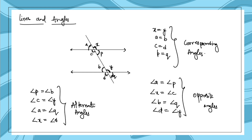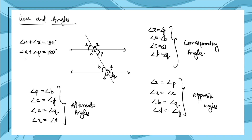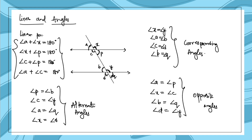Here, p and b, and c and y are called alternate interior angles because they are on the inner side. These are the relationships which build up for the angles when you have parallel lines. There are also more properties: angle a plus angle x equals 180 degrees. If you have a straight line, the angles on that line sum to 180 degrees. Similarly, angle x plus angle p is 180 degrees, angle c plus angle p is 180 degrees, and angle a plus angle c is 180 degrees. These are called linear pairs.